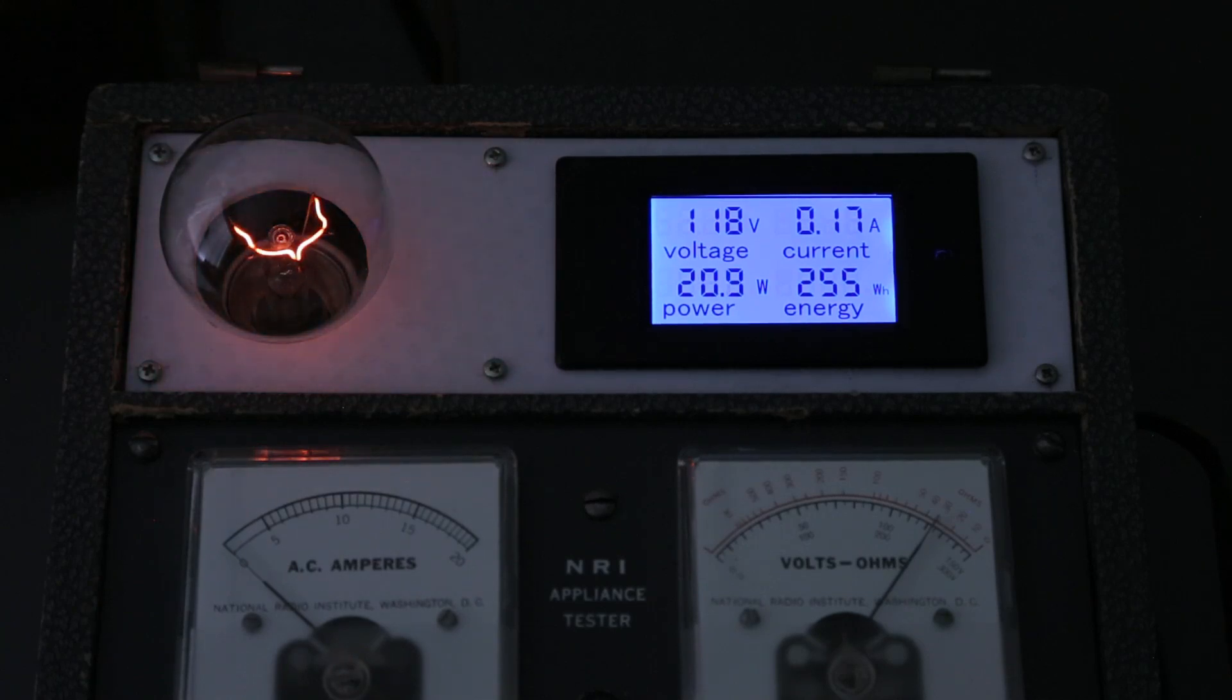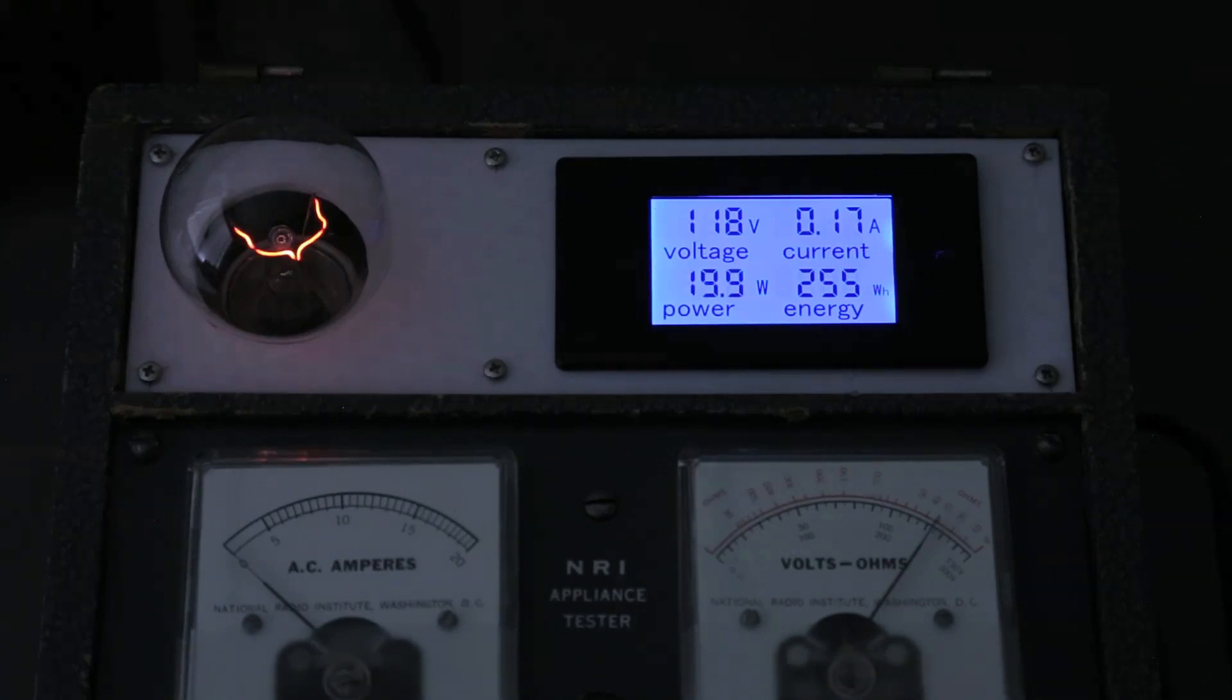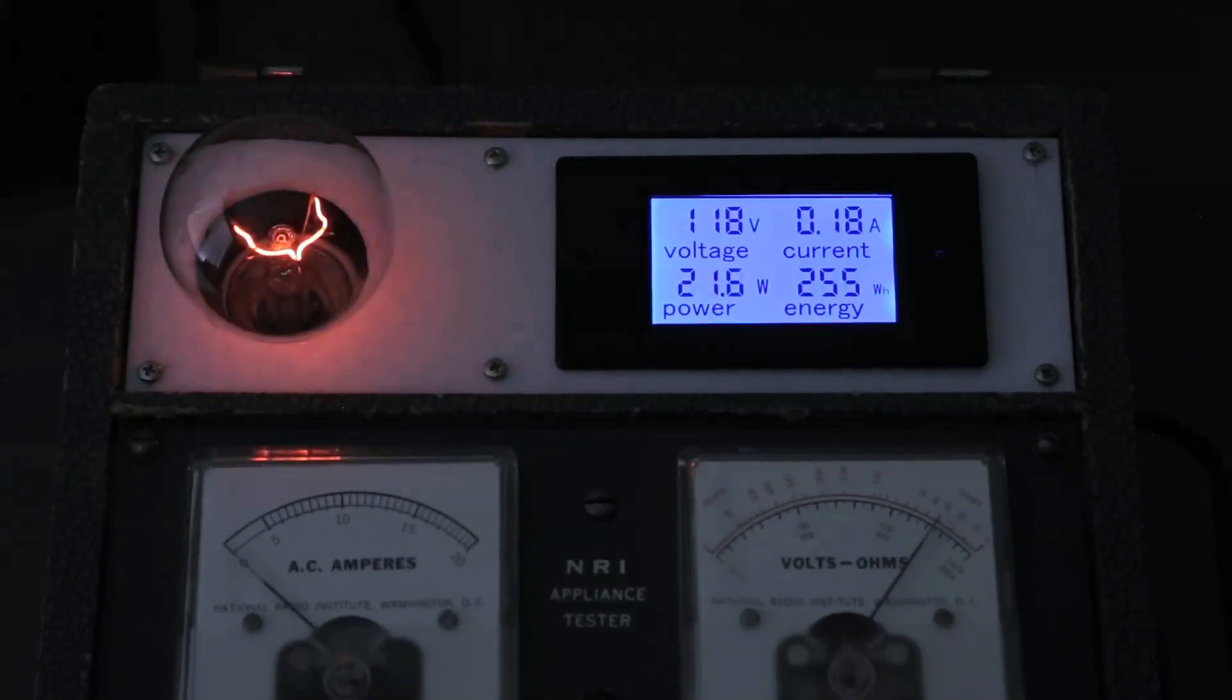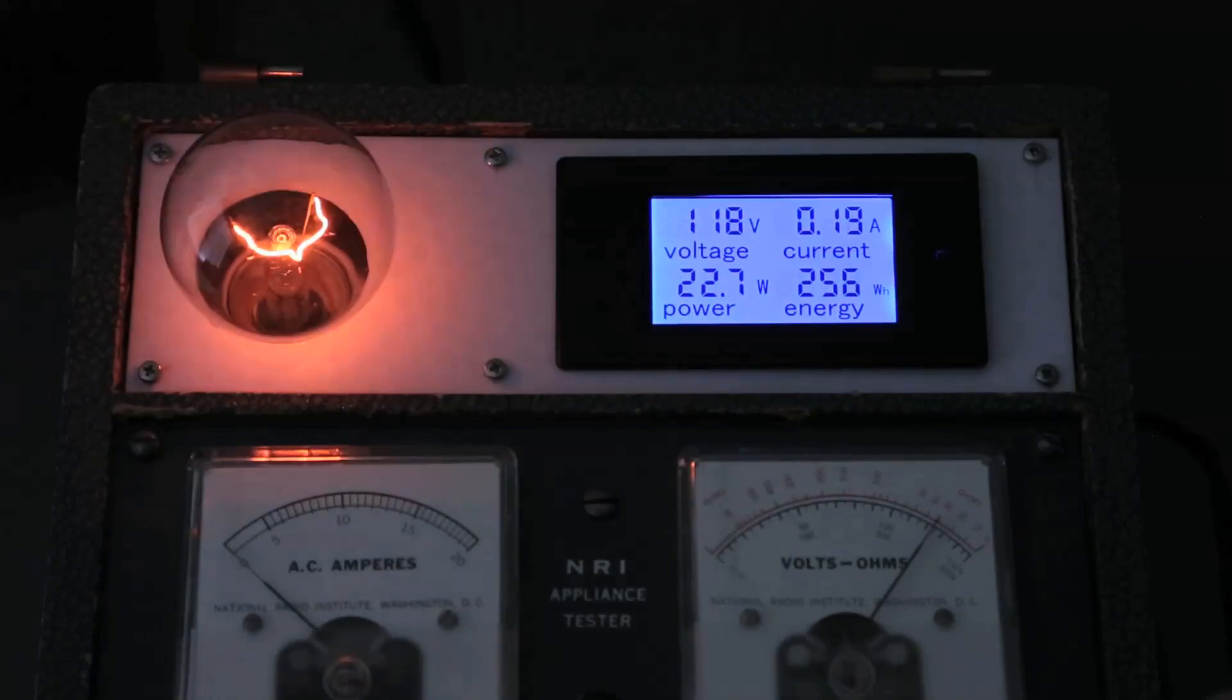The 40 watt bulb glows, but the radio doesn't play. This is not a sign of problems, but the wattage of the bulb is simply too small. The digital meter indicates 190 milliamps and 22.7 watts.